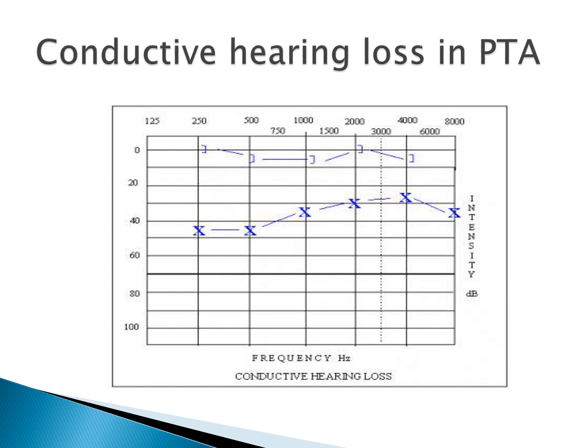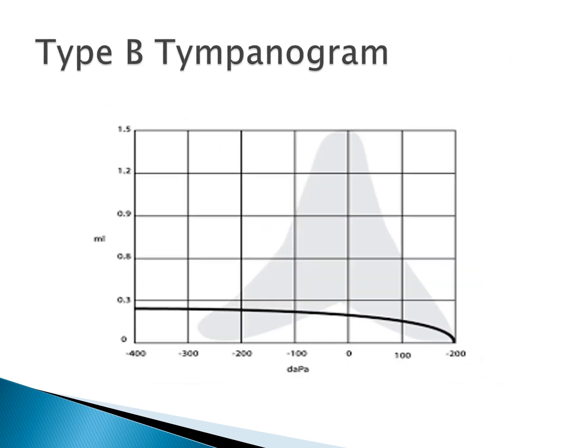This audiogram of the left ear shows a conductive hearing loss with an air-bone gap, which is the type of audiogram seen in otitis media with effusion. The tympanogram shows a Type B curve — a flat or dome-shaped curve — with no identifiable peak. This is seen in any case of fluid in the middle ear, such as otitis media with effusion.